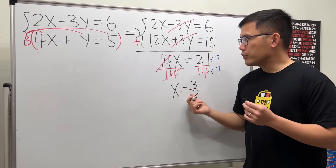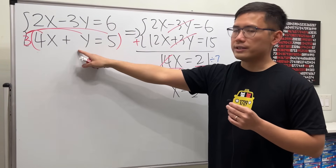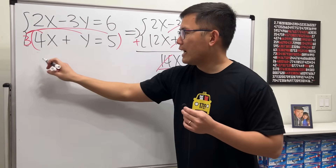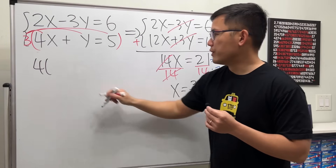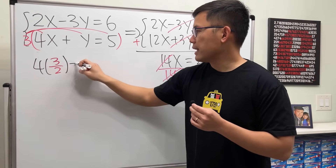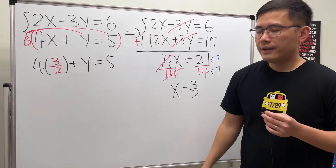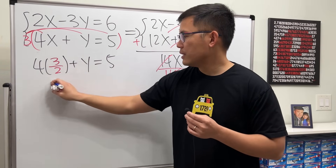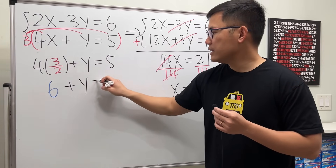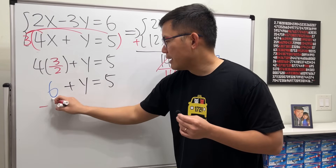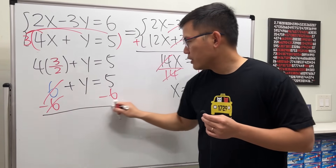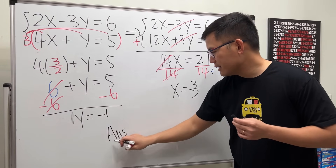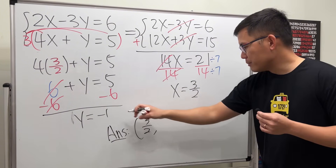Now with x equals 3 over 2, we can plug this into either the first or second equation and solve for y. It's easier to work with the second equation because we just have y. So here we have 4 times 3 over 2 plus y equals 5. And 3 over 2 times 4: 3 times 4 is 12, divided by 2 is 6. So 6 plus y equals 5. Then minus 6 on both sides, we get y equals negative 1. Again, the answer is 3 over 2, negative 1.